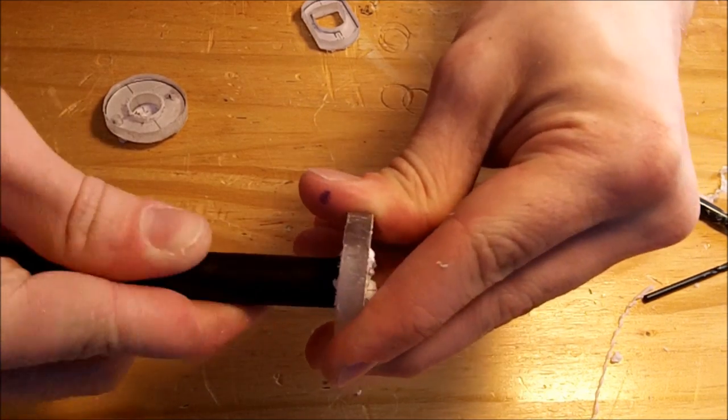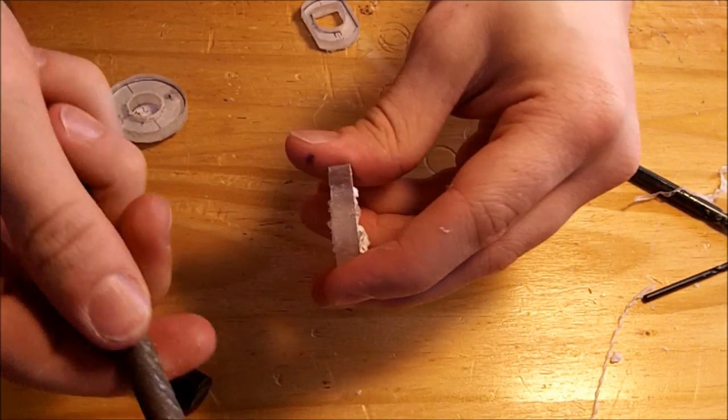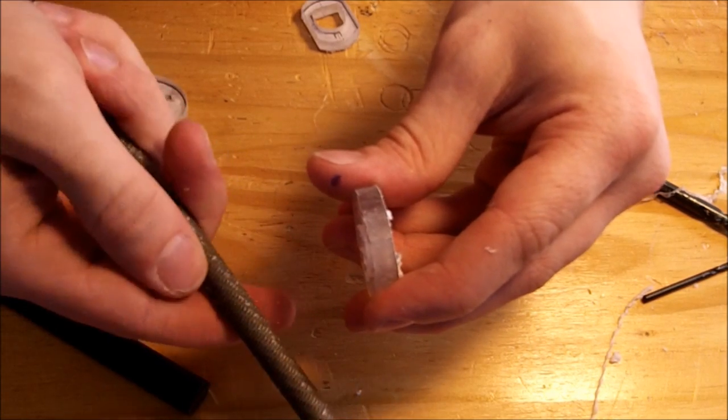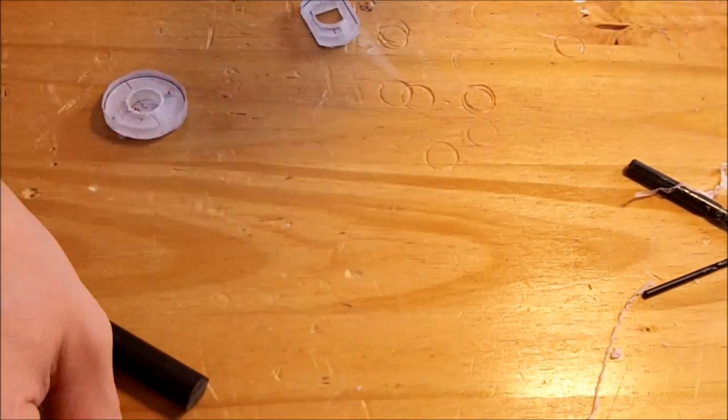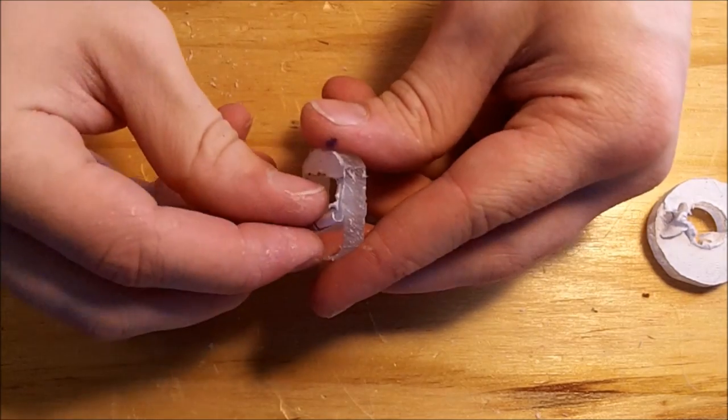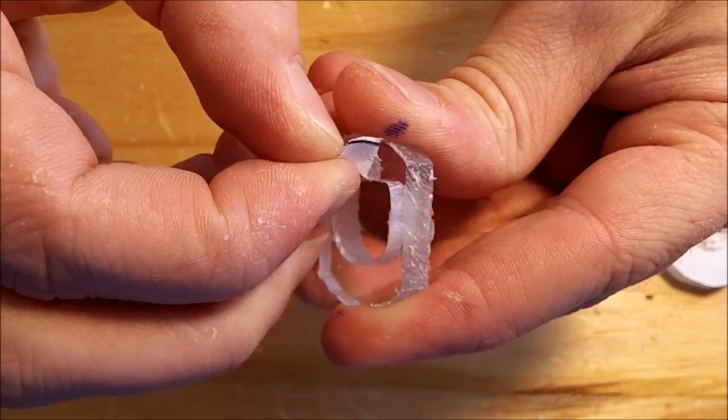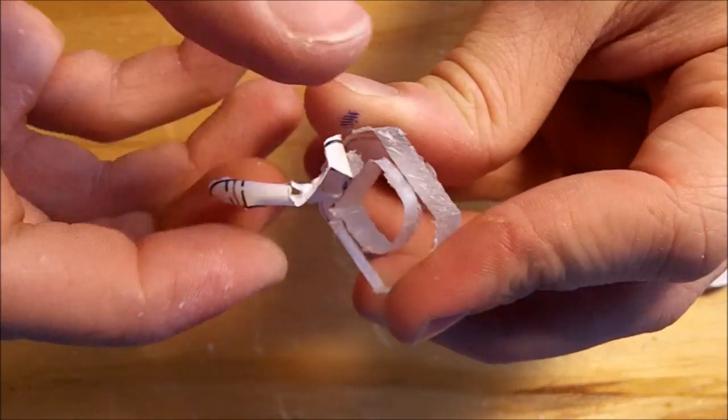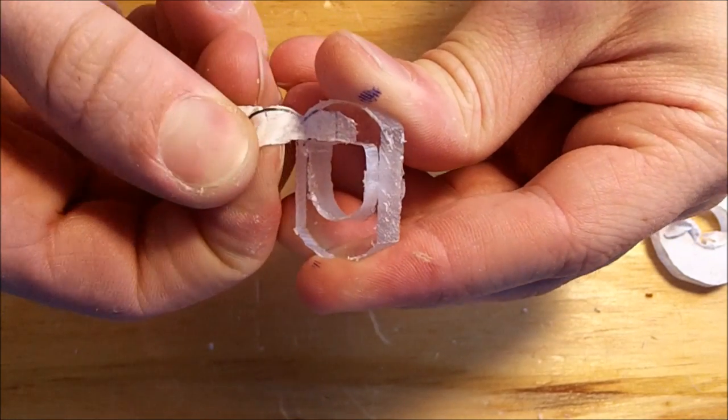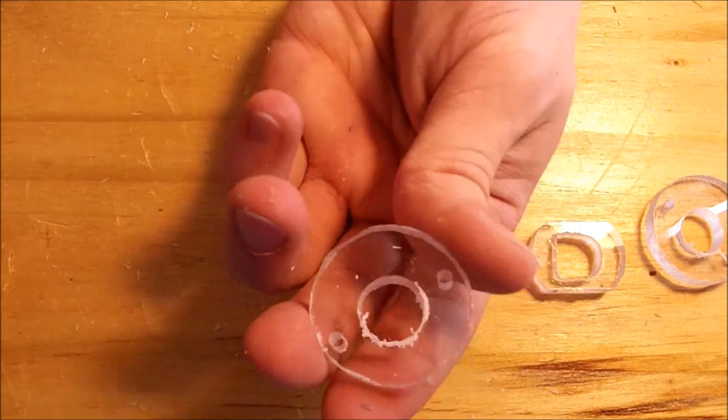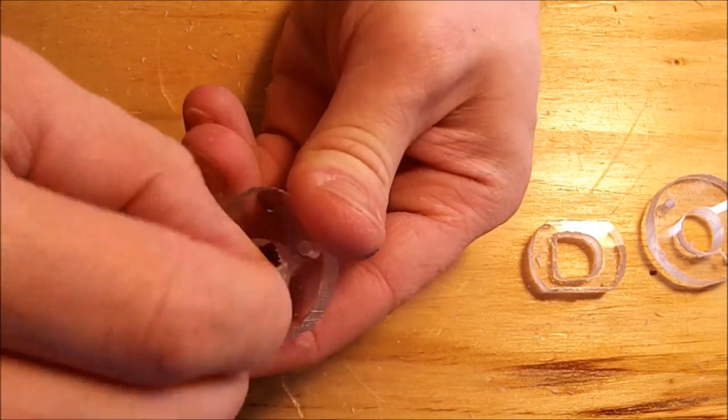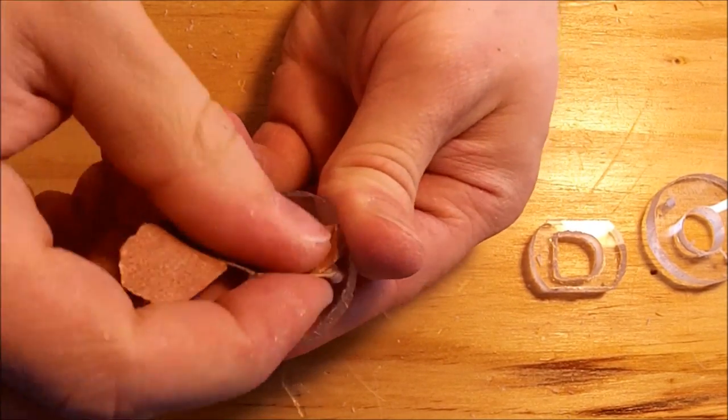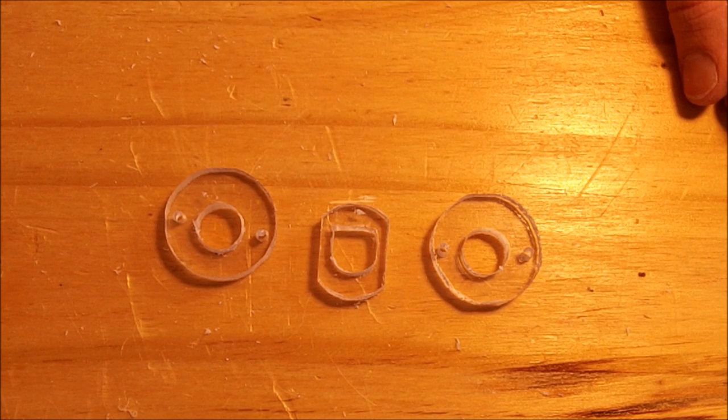Test fit with a half inch nylon rod. And use your rat tail file to remove material as necessary. The paper templates can now be peeled off. Use some sandpaper to get rid of any extra burrs. Here are the three completed pieces.